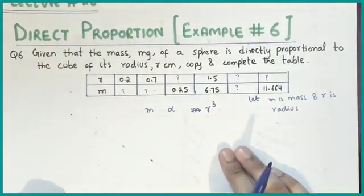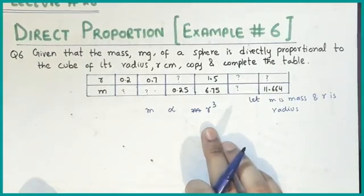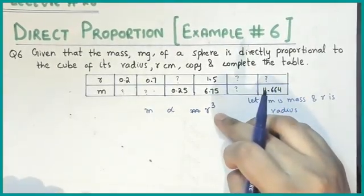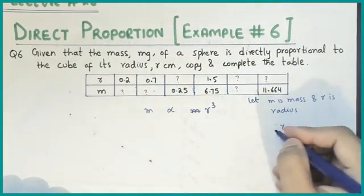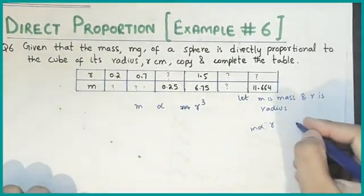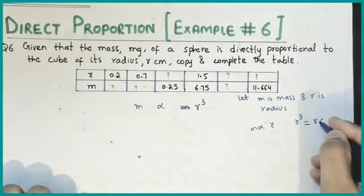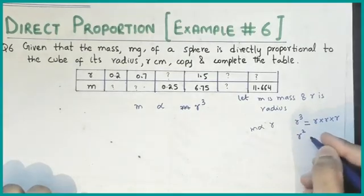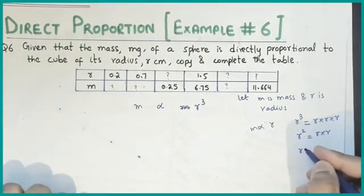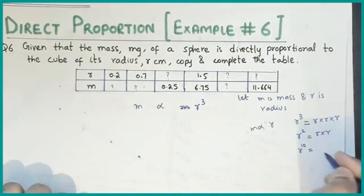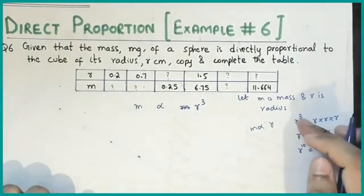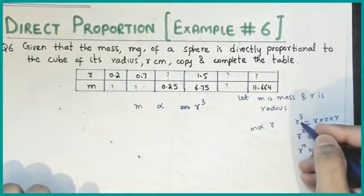According to our condition, mass is directly proportional to r cubed. For students who don't know: they said the cube of its radius — not a simple radius. If it only says mass is directly proportional to radius, that means r alone. But cube of radius means r multiplied by r multiplied by r. If r squared means r times r, similarly r cubed means r to the power of 3.